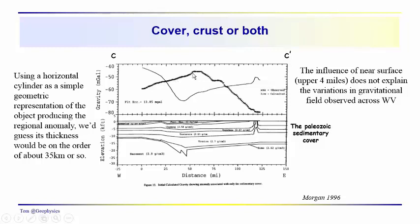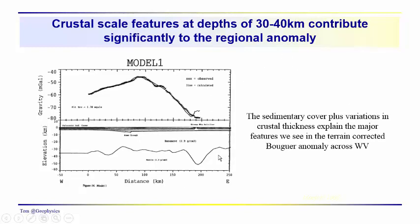So again, if we come back and use a simple geometrical object representation, model this as maybe a long cylinder, and look at the half maximum point, we'd say the depth to the center of the object producing this anomaly would be on the order of 30, 35 kilometers or so. So just the shape of the anomaly suggests that we're seeing something that's associated with a deeper source.